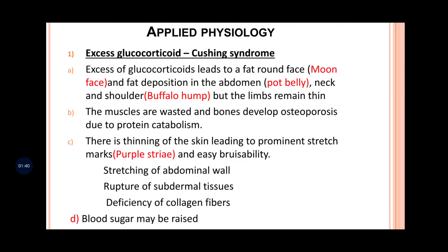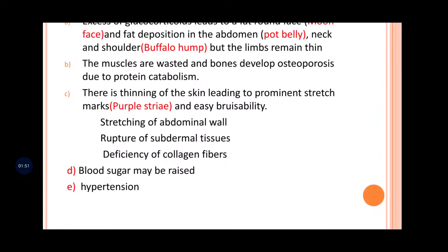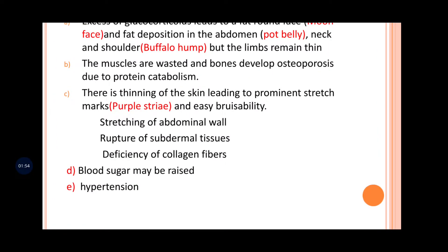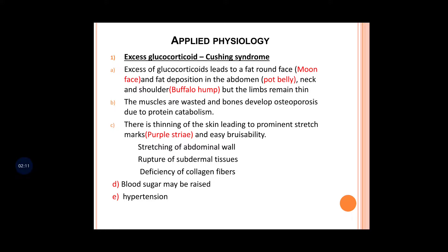If a person gets hurt, they can develop easy wounds and easy bruises all over the body. The main reason is that because of stretching of the abdominal wall, there is deficiency of collagen fibers and rupture of the subdermal tissue below the skin. Blood sugar may also be raised and the patient can suffer from hypertension, because cortisol affects glucose metabolism.